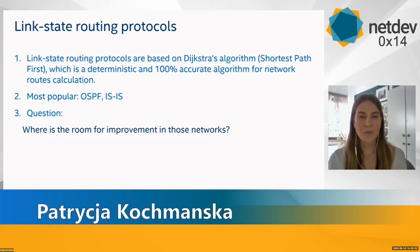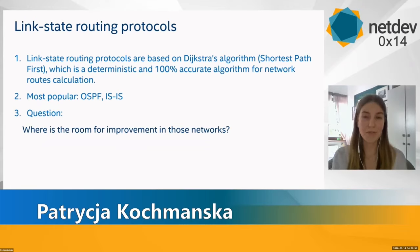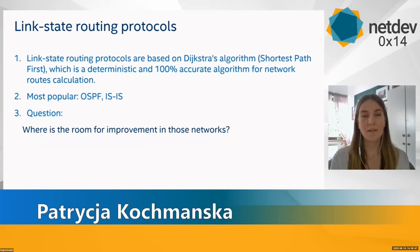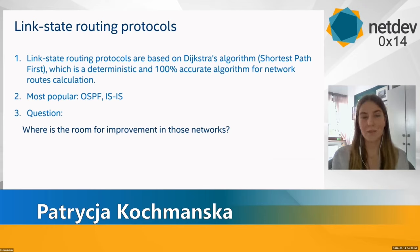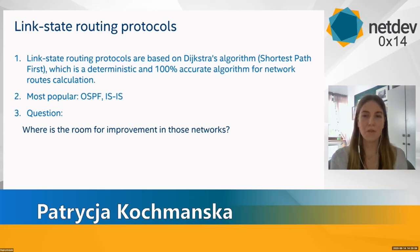Modern routing protocols take various approaches on how to select paths for packets in the most effective way. There are two main classes of routing protocols. The first is distance vector routing protocols, in which routers have no information about the whole network topology, and decisions about the best routes are based only on data about costs gained from nearest neighbors. There are also link state routing protocols, which assume that each network node creates and stores its own scheme of the whole network topology, and then independently calculates the least cost path from itself to every other node. The topology scheme may be considered as a graph, and paths are calculated using Dijkstra's algorithm. The most popular examples of link state routing protocols are OSPF and ISIS.